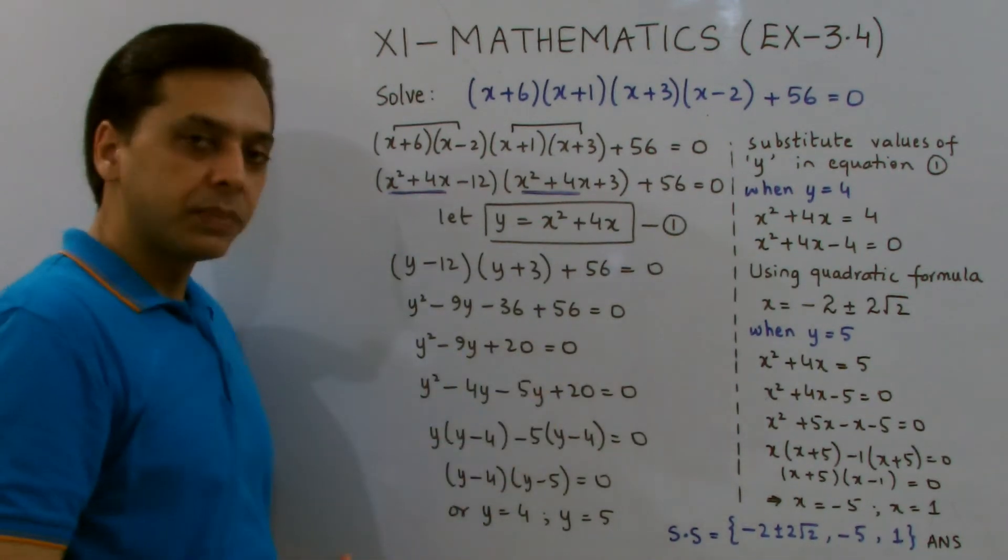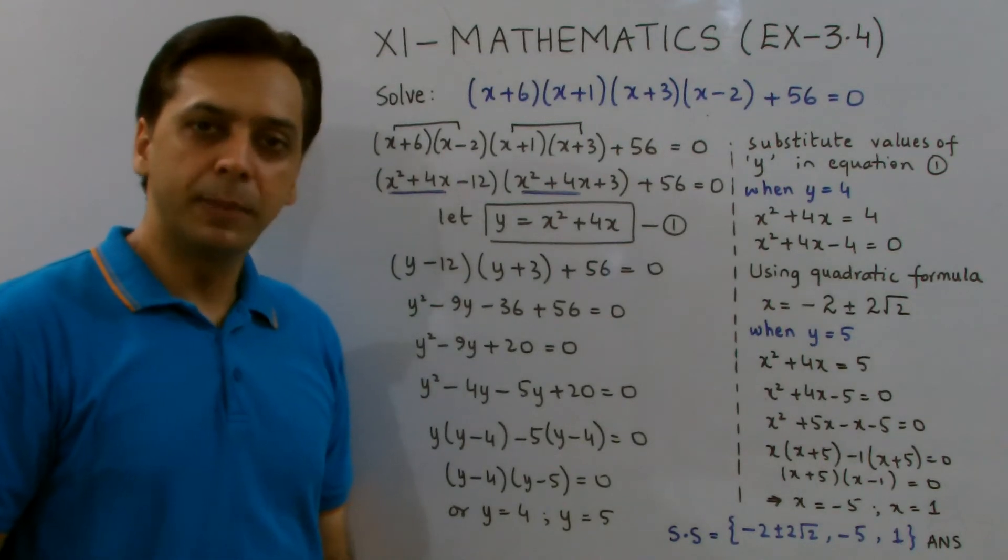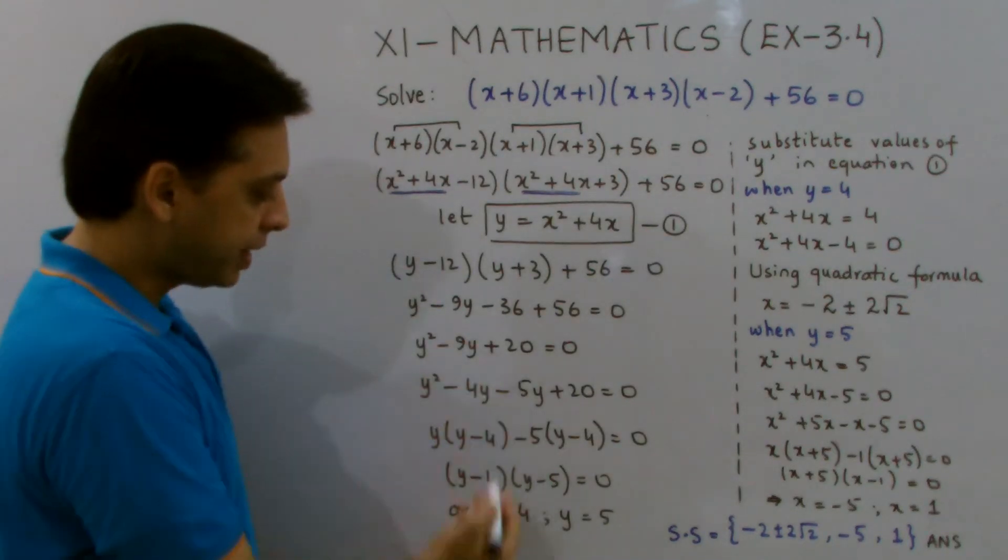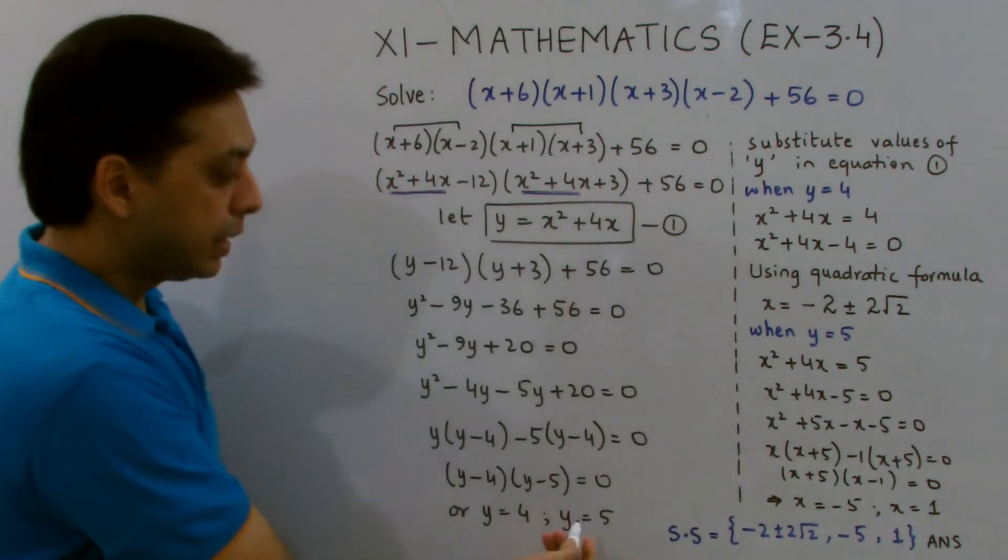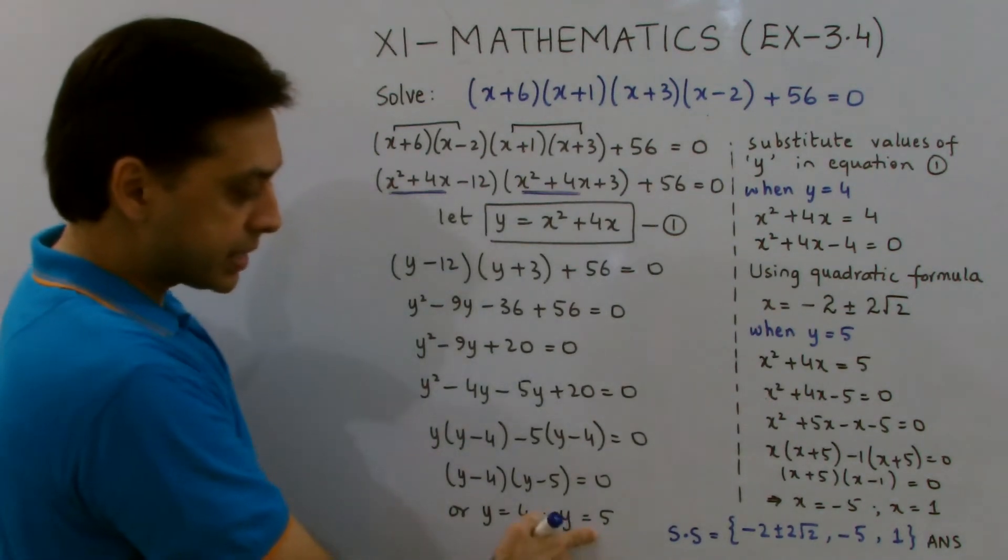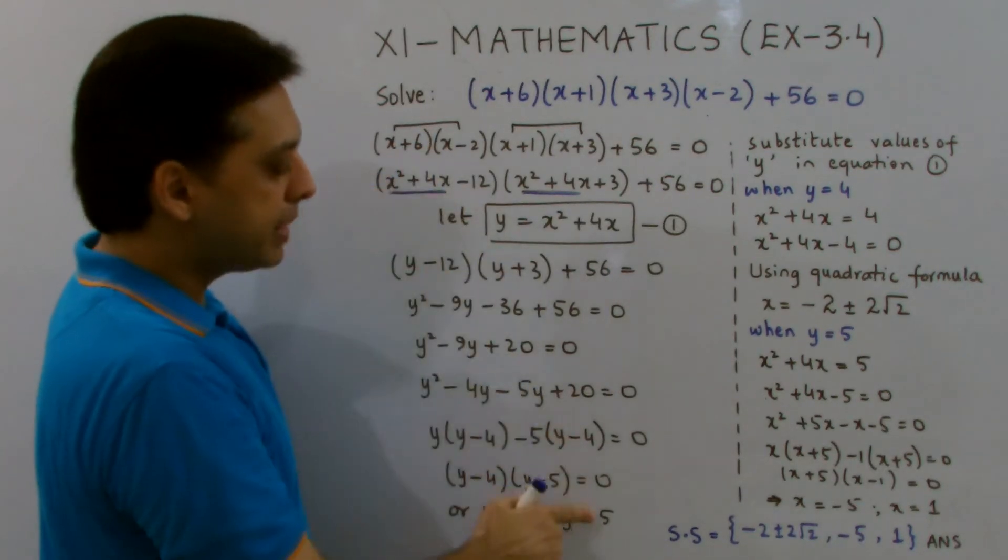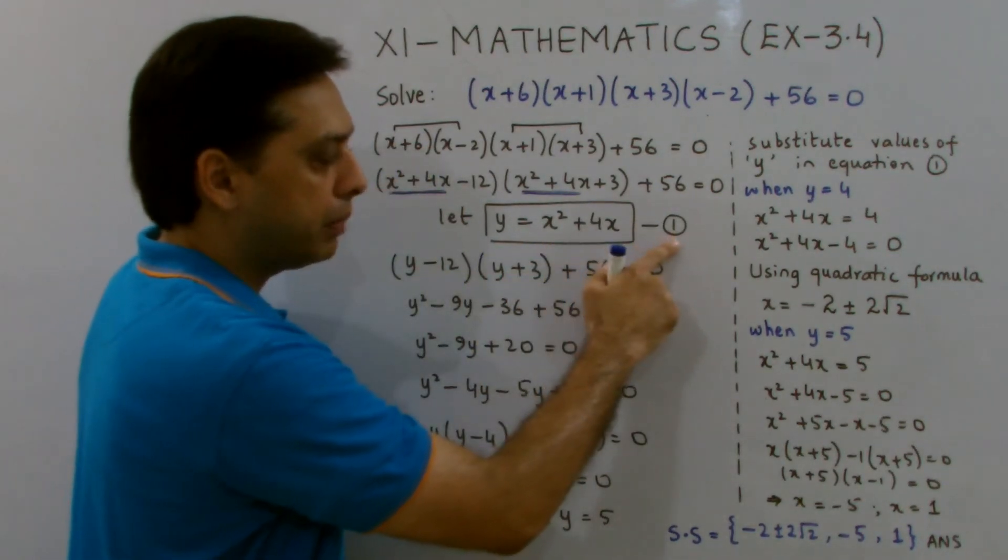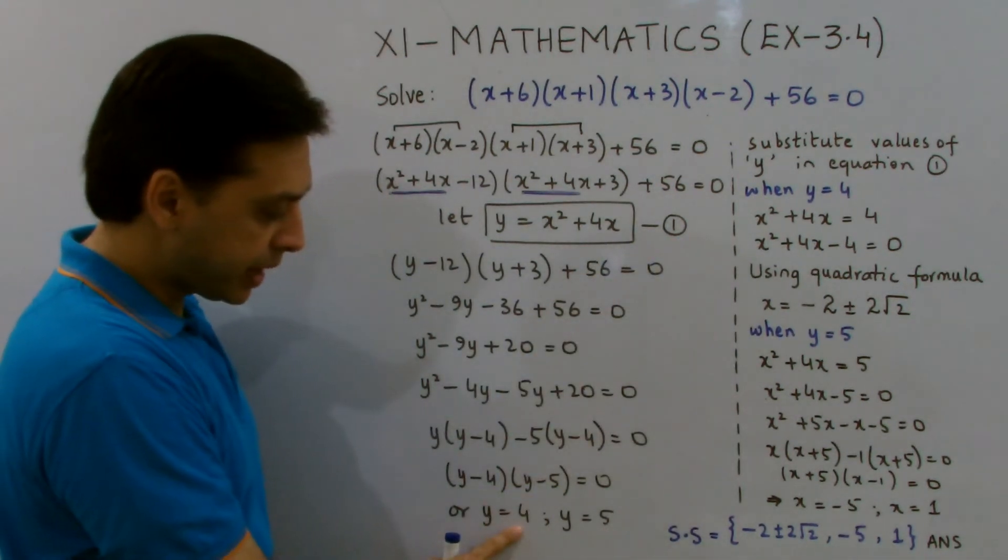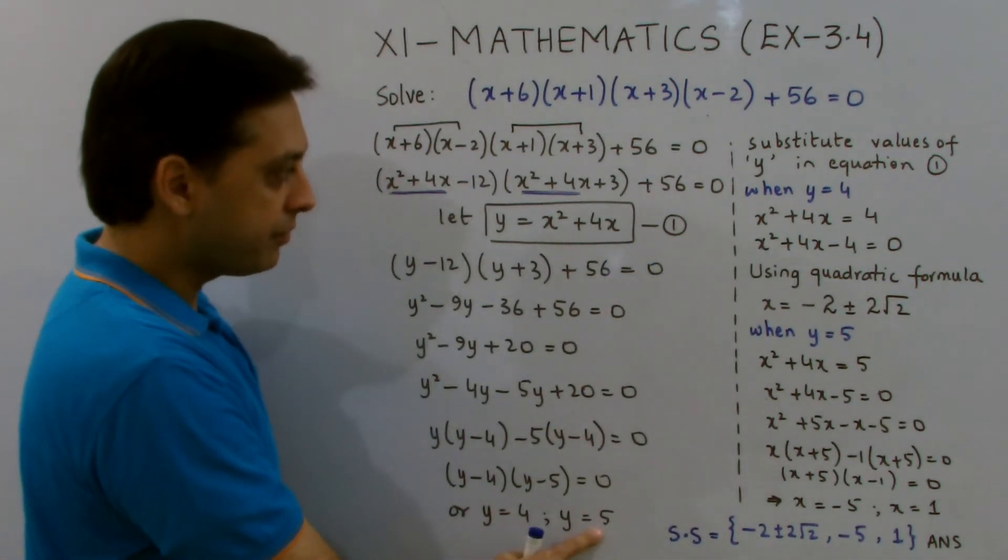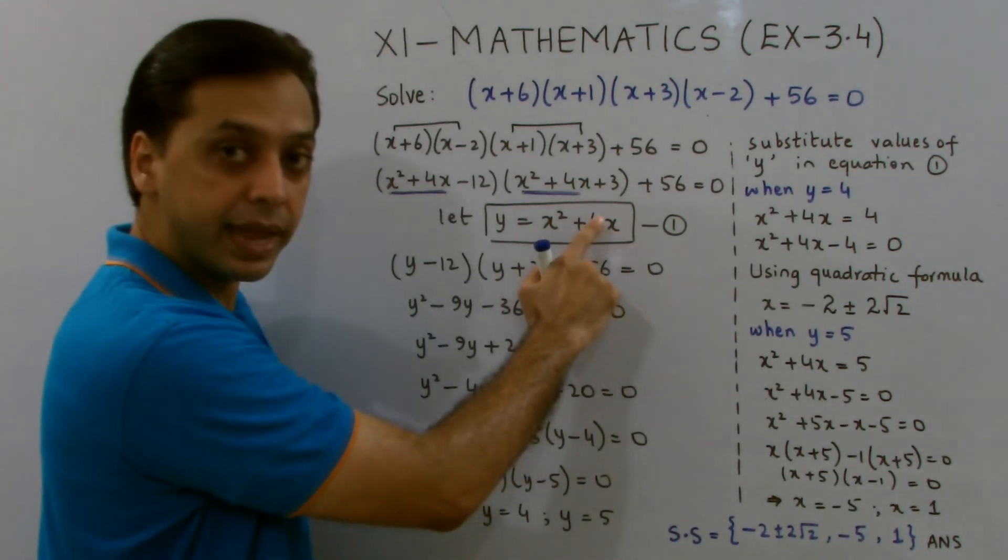Through any of the methods—by factorization, by quadratic formula, or by completing the square method—I can get the value of y, which is 4 and 5 in this case. Now, this is not my answer actually. I am looking for the answer in x. As I have already supposed an equation, equation 1, I can put these values of y, 4 and 5, back in equation 1 to get the values of x.